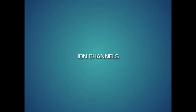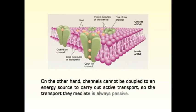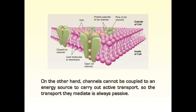Now let's look at ion channels. Channel proteins concerned specifically with inorganic ion transport are referred to as ion channels. More than one million ions can pass through one channel each second, which is a rate 1000 times greater than the fastest rate of transport mediated by any known carrier protein. On the other hand, channels cannot be coupled to an energy source to carry out active transport, so the transport they mediate is always passive.